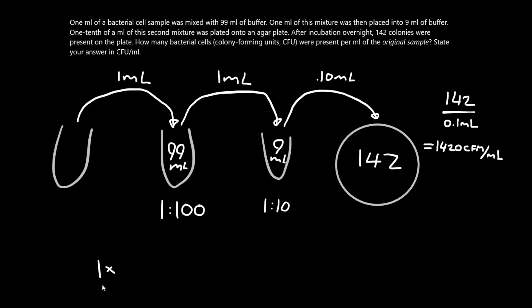The simplest way to look at this is to put everything in scientific notation. So this 1 times 10 to the 1 is this dilution here. And 1 times 10 to the 2 is the 1 to 100 dilution. And 1.42 times 10 to the 3 are the colony forming units calculated put into scientific notation. And when I find the answer, all you do is just add the exponents, and we get 1.42 times 10 to the 6 colony forming units.